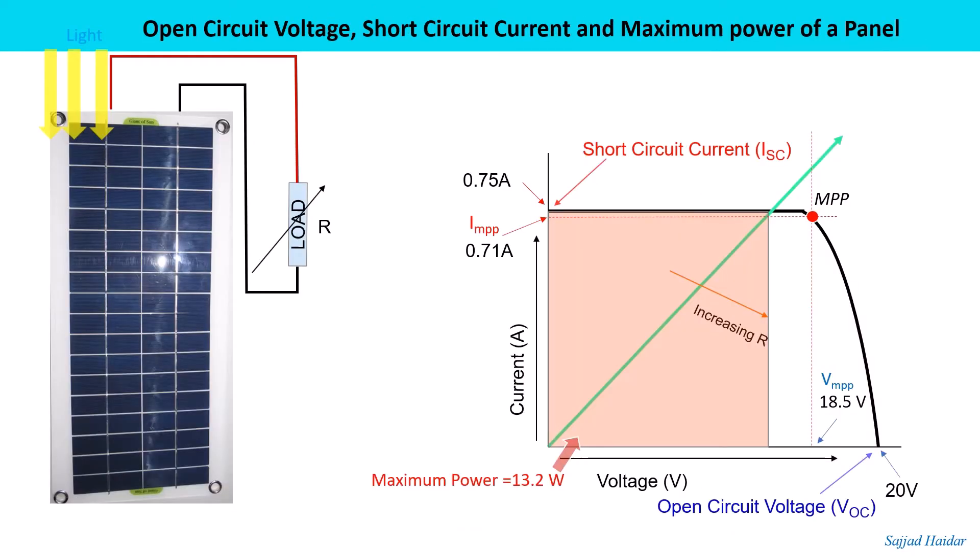If our solar panel is now connected to a load and the load is varied, as before you know if the load is varied the power starts increasing from the very minimum to the maximum and then it goes down again. And maximum available power should be 13.2 watt represented by the area as shown here.